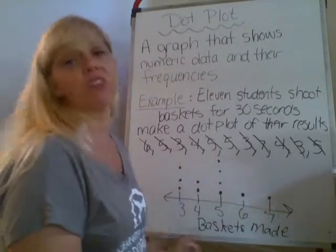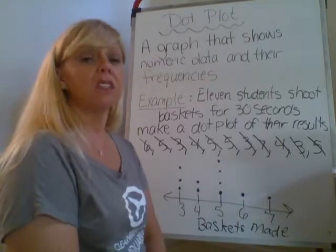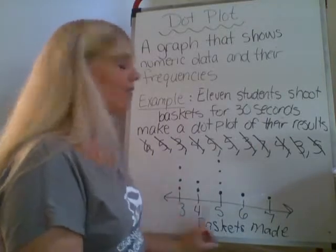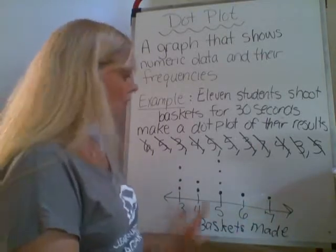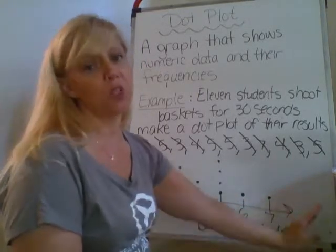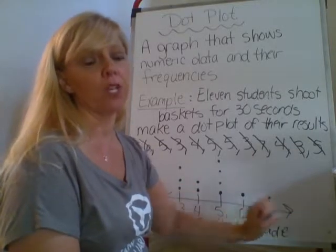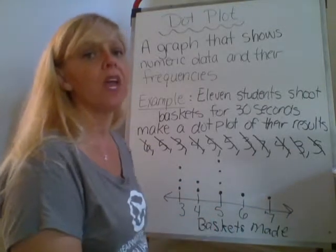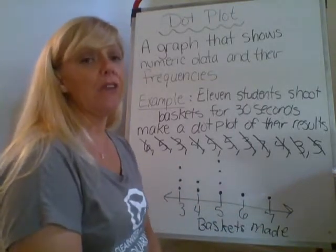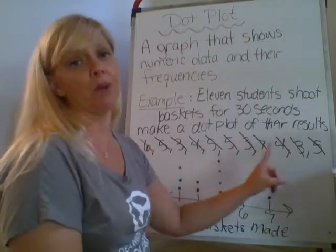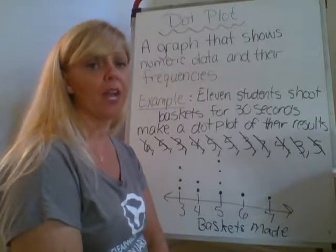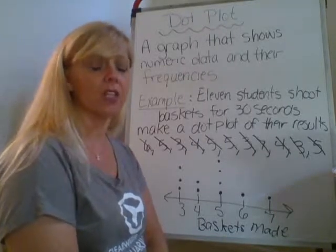A dot plot is most useful for two things: when you have a small range of data, and when you have a lot of the same number. For example, if I had 20 baskets made I wouldn't want a number line going from 3 to 20 — I'd choose a different graph, which is what we'll talk about in the next two videos. Short range and repeated values are the two main reasons to use a dot plot.